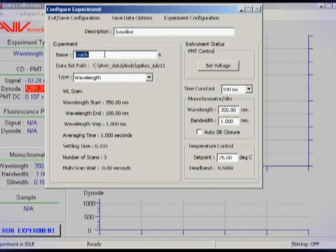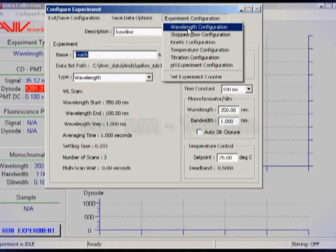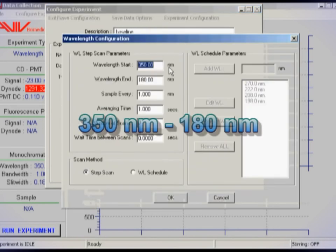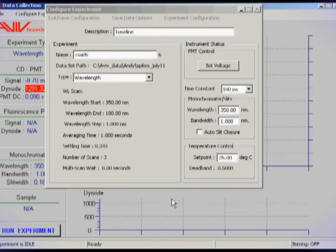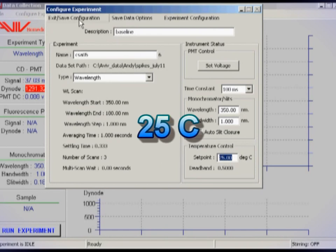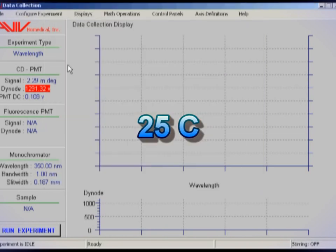Run the scan from 350 nanometers to 180 nanometers or 170 nanometers on SRCD instruments. Use a 1 nanometer step size and a dwell time or scan speed appropriate to your instrument and take 3 repeat scans. The temperature must be 25 degrees bearing in mind that the magnitude of the CSA spectrum is temperature sensitive.